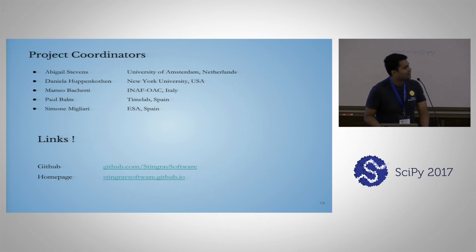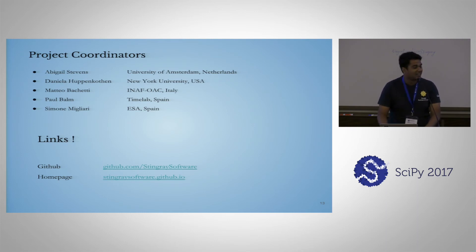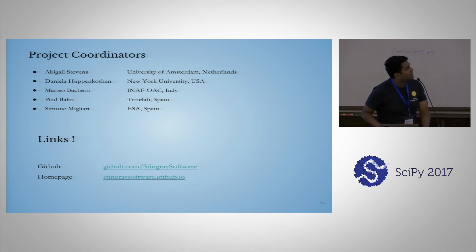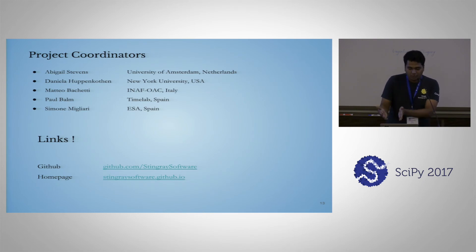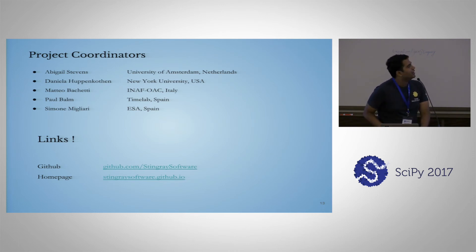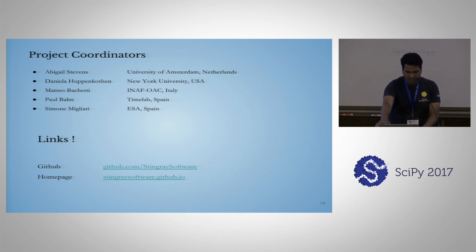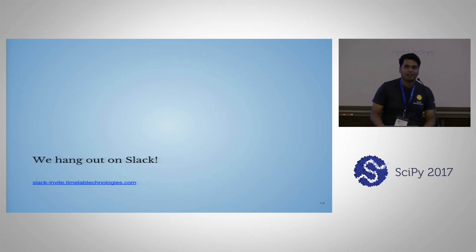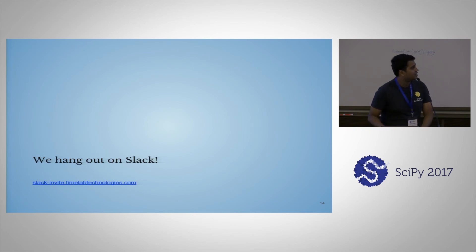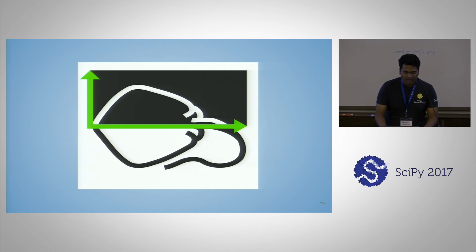Daniela and Abigail had their research project under X-ray binaries, and they wished there was one comprehensive library for X-ray binaries, so why don't we make it? They met Mathieu, who had a lot of similar code around — pulsar tools and all — and Paul and Simon are the guys from ESA who had to make the GUI and really liked the Stingray library. So there's a GitHub organization and our homepage. We really hang out on Slack a lot. If you have any questions, or if you're interested in contributing, please join us at tinyurl.com slash join-stingray. We'd love to have you there. Thank you — I'd love to take questions.